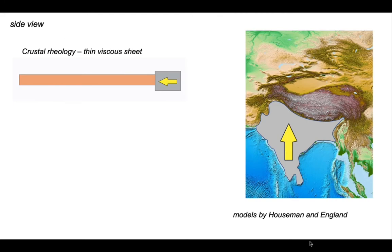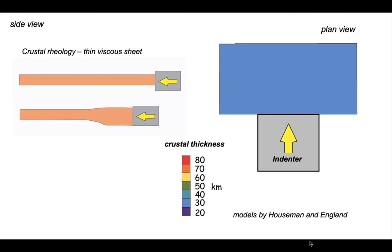This notion is captured in the concept of the thin viscous sheet model for crustal deformation — models developed by Philip Inglis and Greg Houseman back in the 1980s. They applied this model to understand the Tibetan plateau. As some strong lithosphere encounters weak lithosphere, it drives in as an indenter, thickening the weaker crust, creating elevation that is a plateau. And they modeled this numerically.